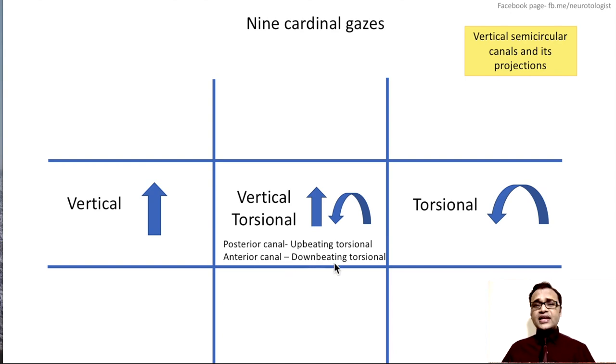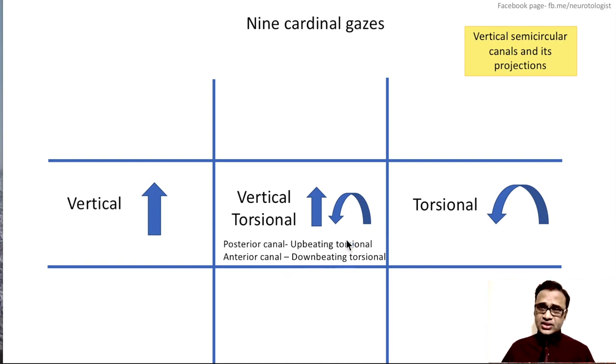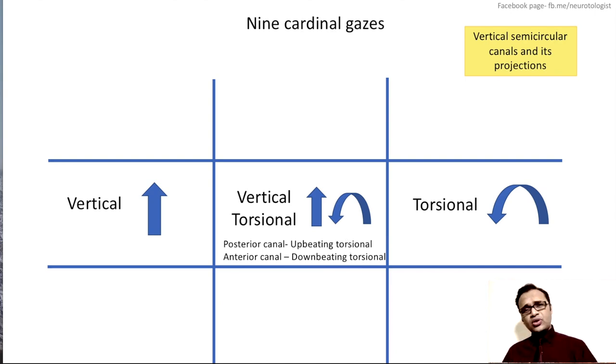In the case of posterior canal BPPV, it causes upbeating torsional nystagmus in the center gaze, predominantly upbeating on one side and predominantly torsional on the other. In anterior canal BPPV, it can be downbeating torsional in the center gaze, predominantly downbeating in one gaze and predominantly torsional in another gaze.